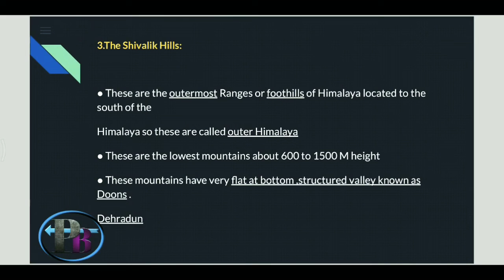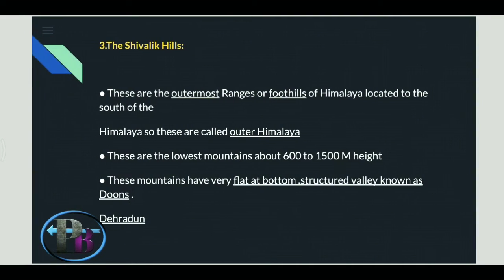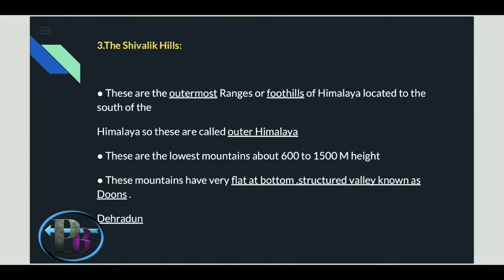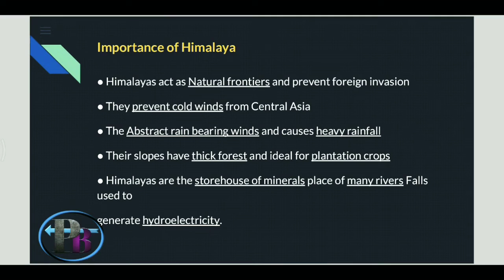The Shivalik Hills are the outermost range, also called the foothills of the Himalaya. They have very limited height and are also called the Outer Himalaya. These are the lowest mountains, with the highest point at 1,500 meters, and are very flat at the bottom. Such a flat-bottomed structured valley is called a 'dun.' One very important example is Dehradun, known because of this land feature.